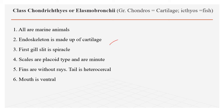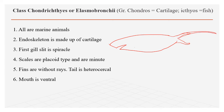In Chondrichthyes, the skin surface has tiny placoid scales, which are very small in size but have teeth-like structures. The fins are without rays — there are no rays present on the fins made up of either cartilage or bone. The tail is heterocercal, meaning unequal and asymmetrical — one branch of the tail is long whereas the other branch is short.